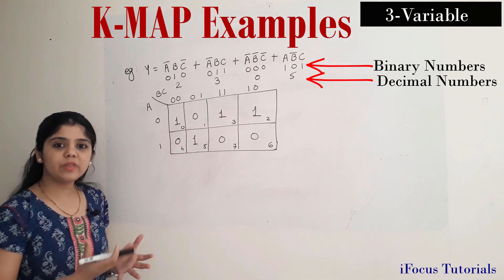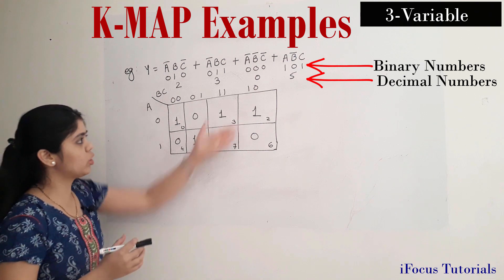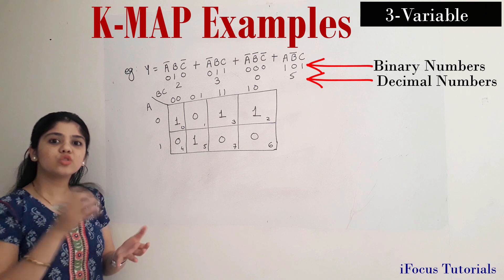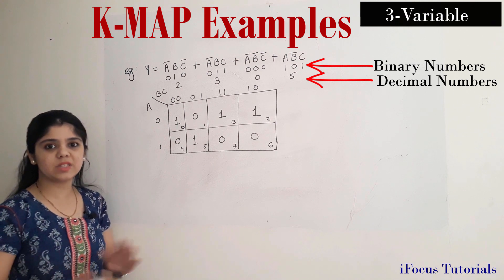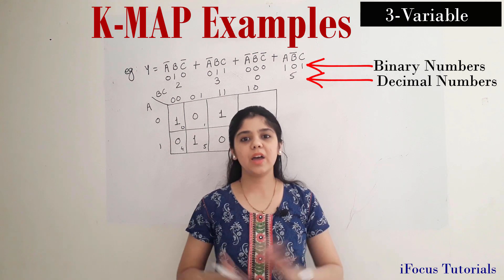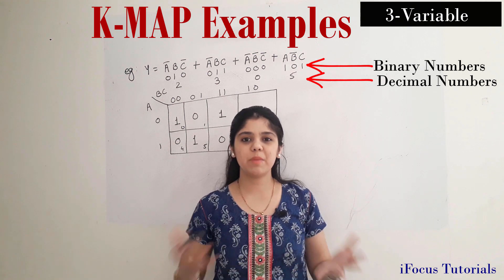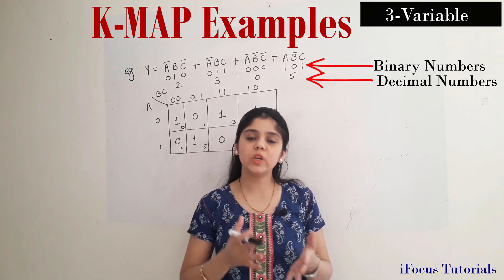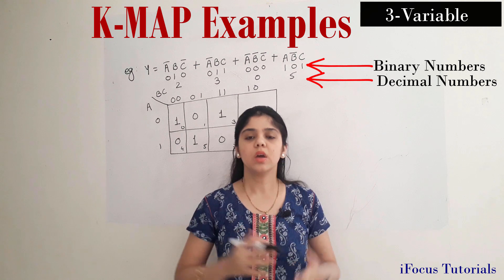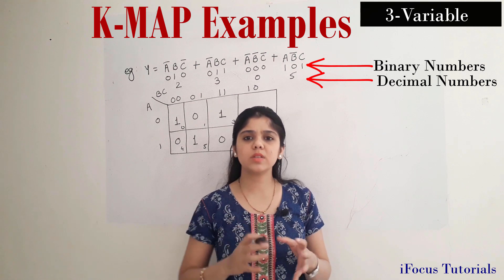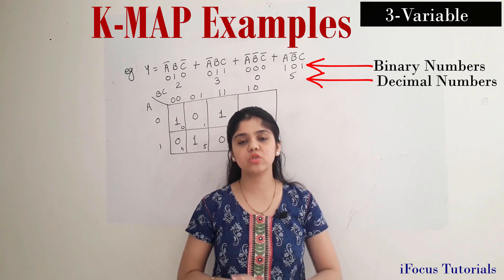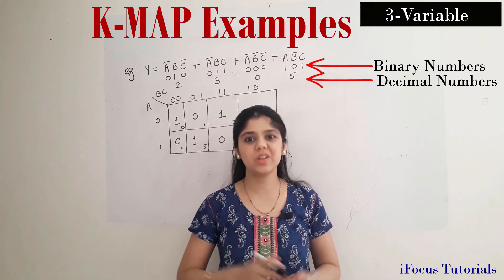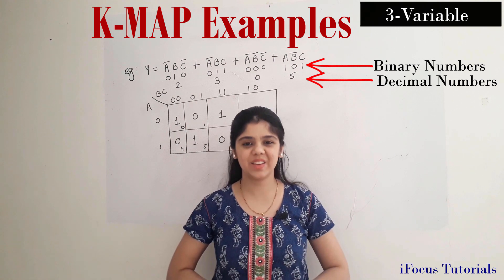You can pause the video here, check what groups can be made, and find the expression. Let me know the answer in the comment section. So here I have covered K map examples of two variable, three variable, and four variable with respect to SOP expressions. In the next video I will cover some examples for POS expressions also. If you have any doubt, let me know in the comment section and do subscribe the channel. Thank you.